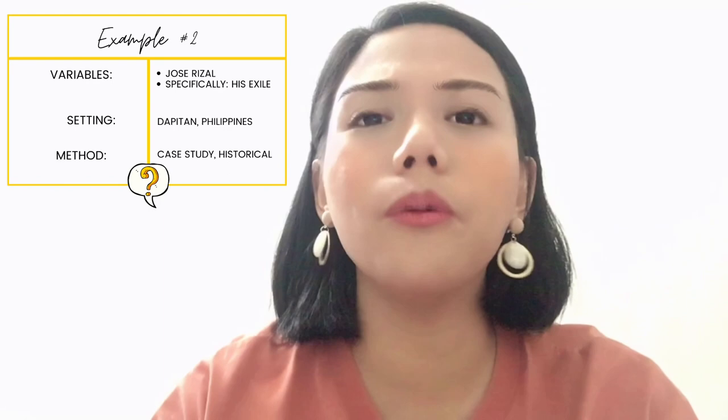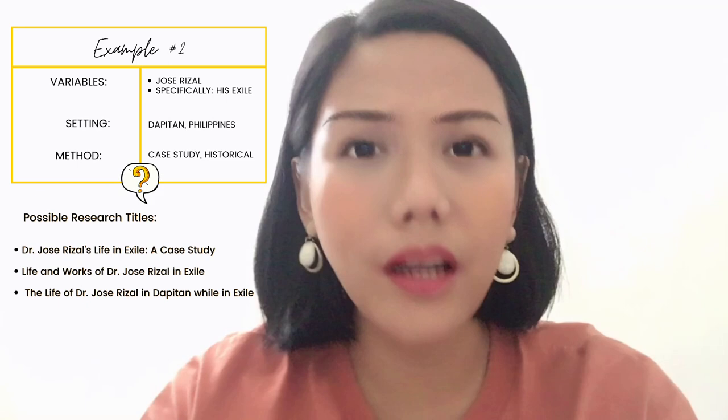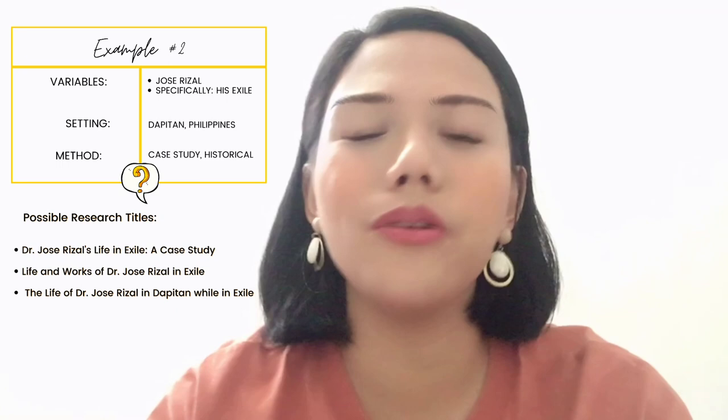Another example is if you want to study historical research — let's say, Dr. Jose Rizal. If you want to study his life in Dapitan, the title can be 'Life and Works of Dr. Jose Rizal in Exile in Dapitan: A Case Study.' So, you can write that. It's very short, it's very specific, and your readers would easily know what your research paper or journal is all about.